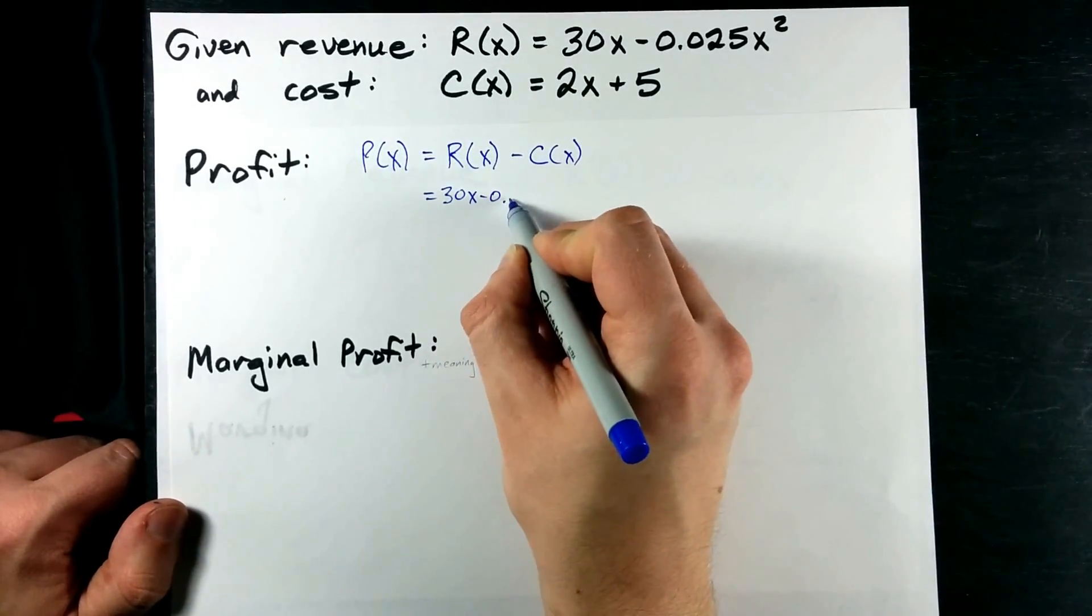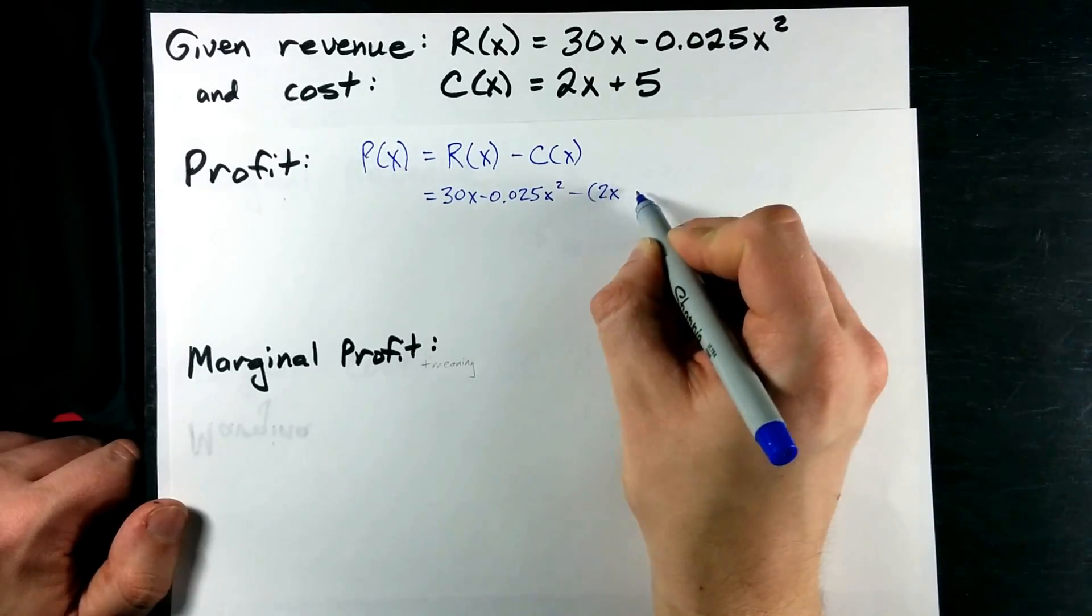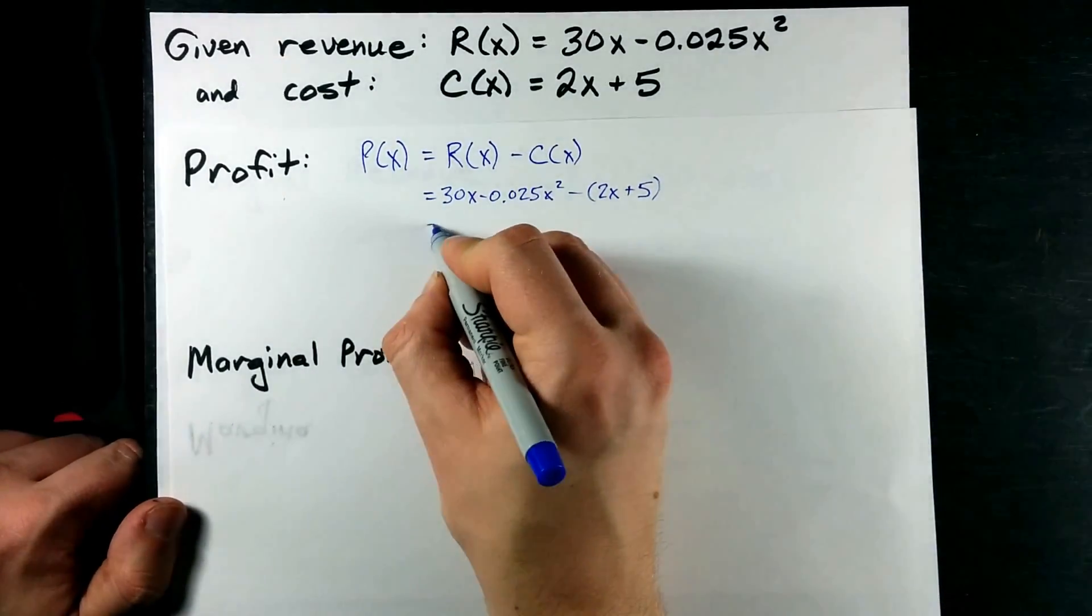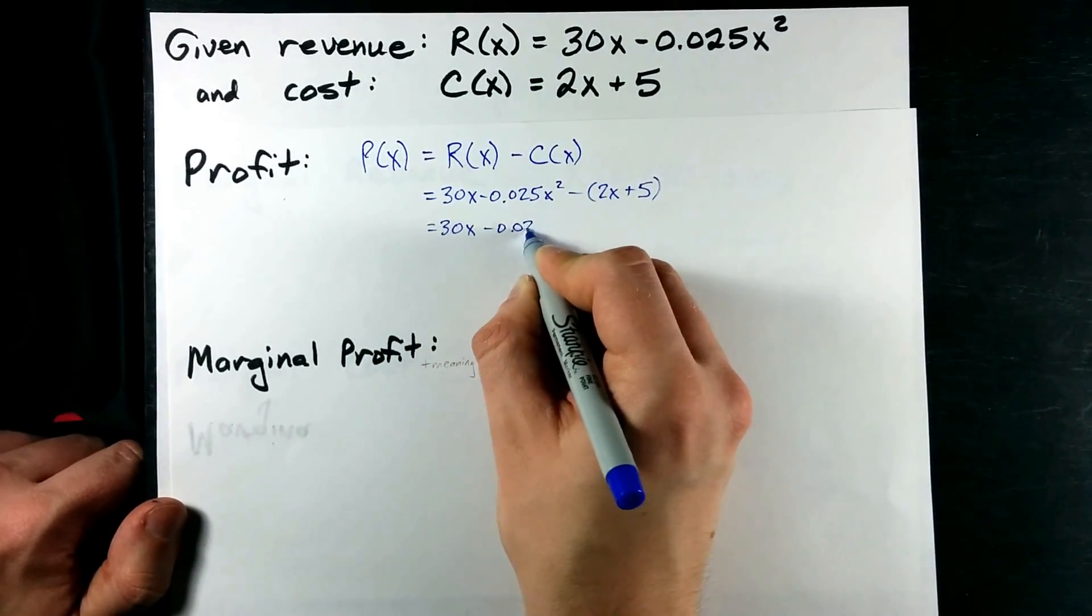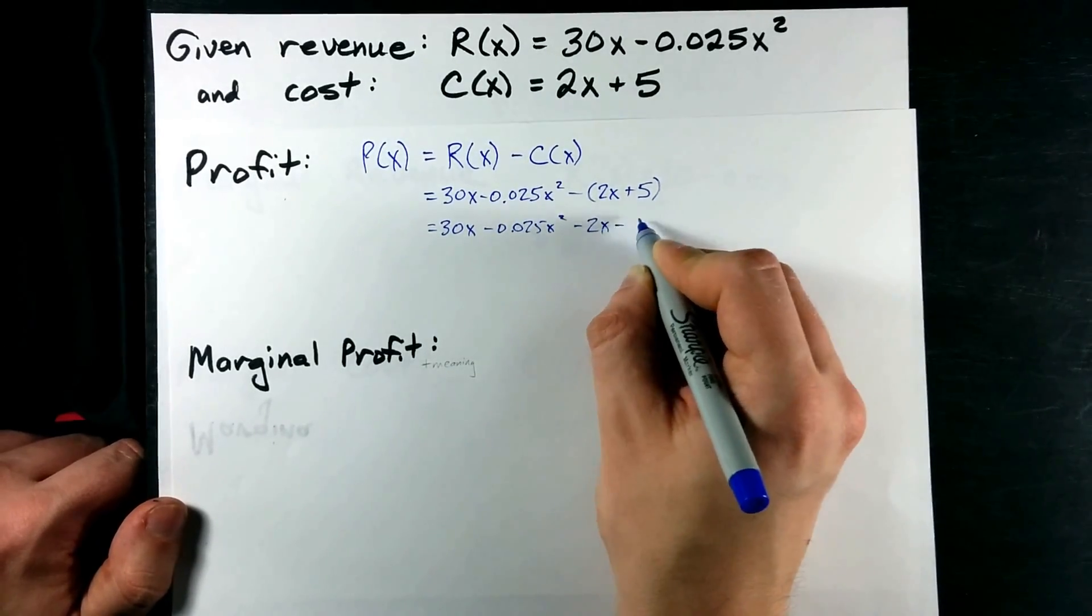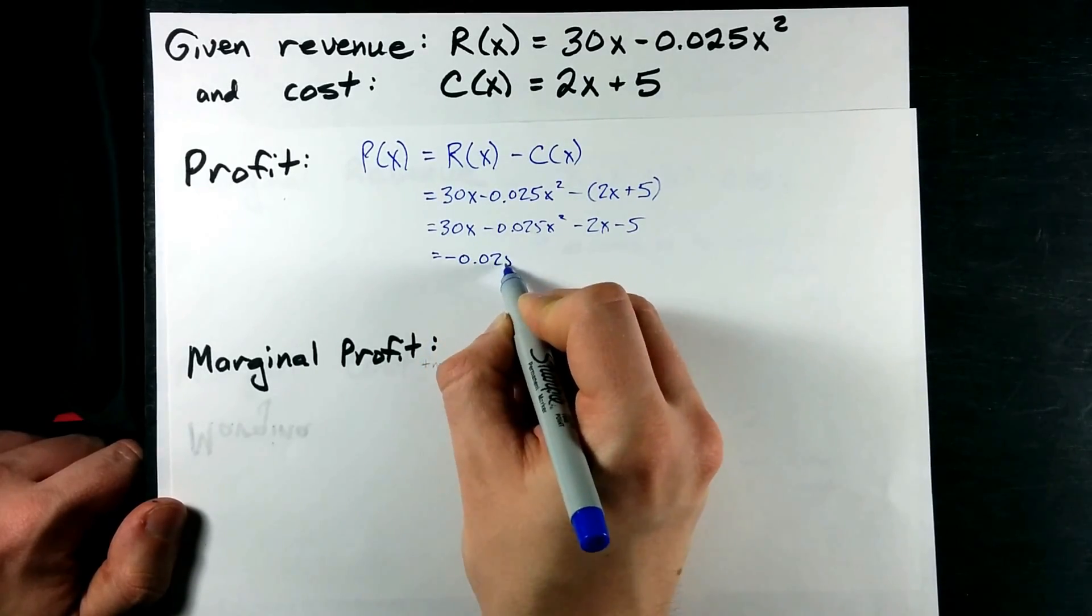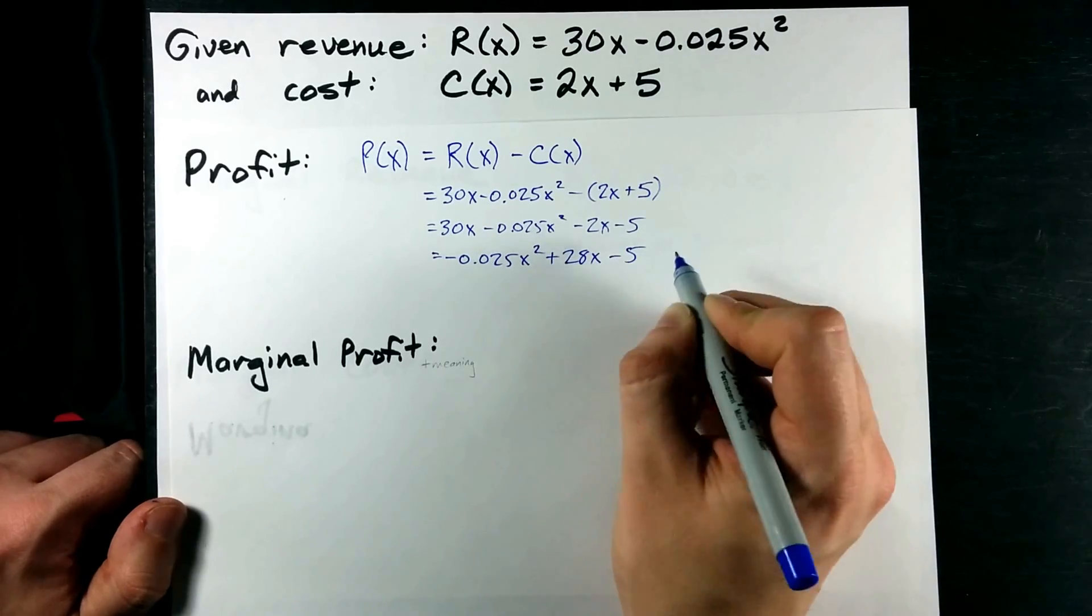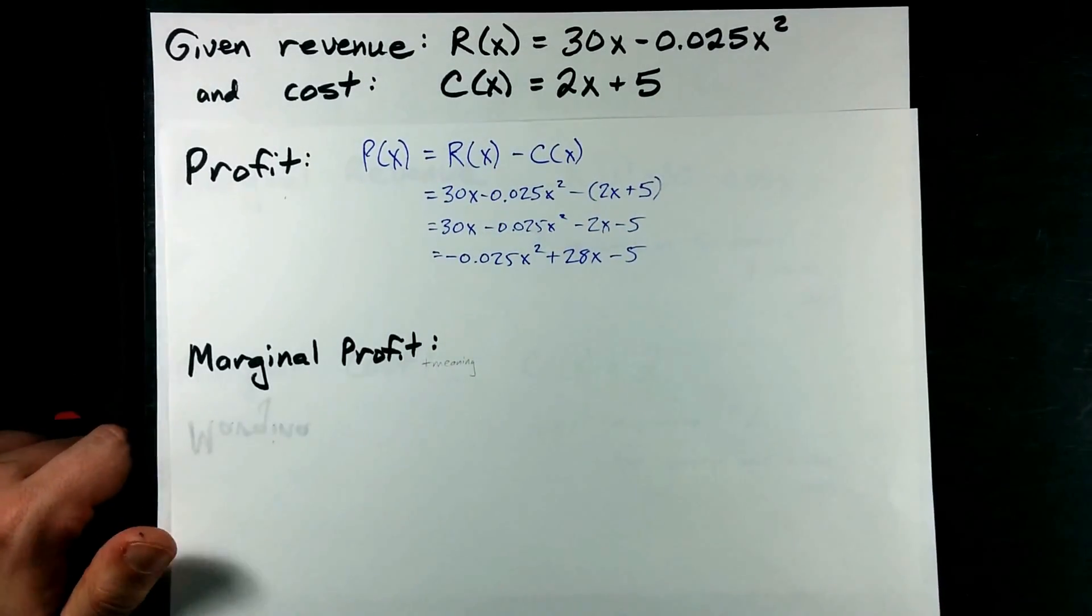That's 30x minus 0.025x squared minus whatever the cost function was. I'm going to have to distribute that negative through the brackets. That's still 0.025x squared with a minus 2x and a minus 5. And when I collect my like terms, I'm going to end up with plus 28x minus 5. That was easy. That's just polynomial work.